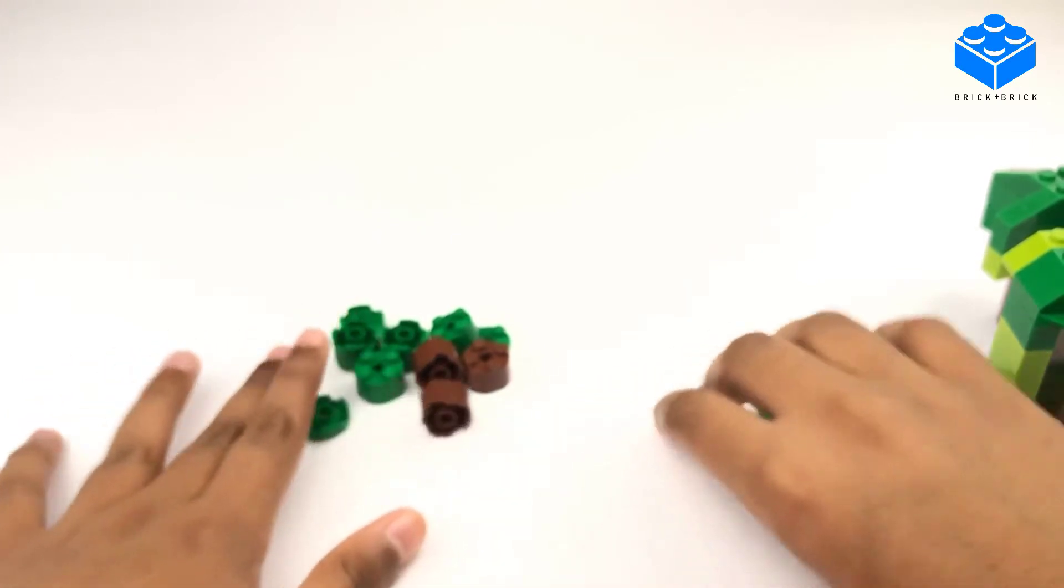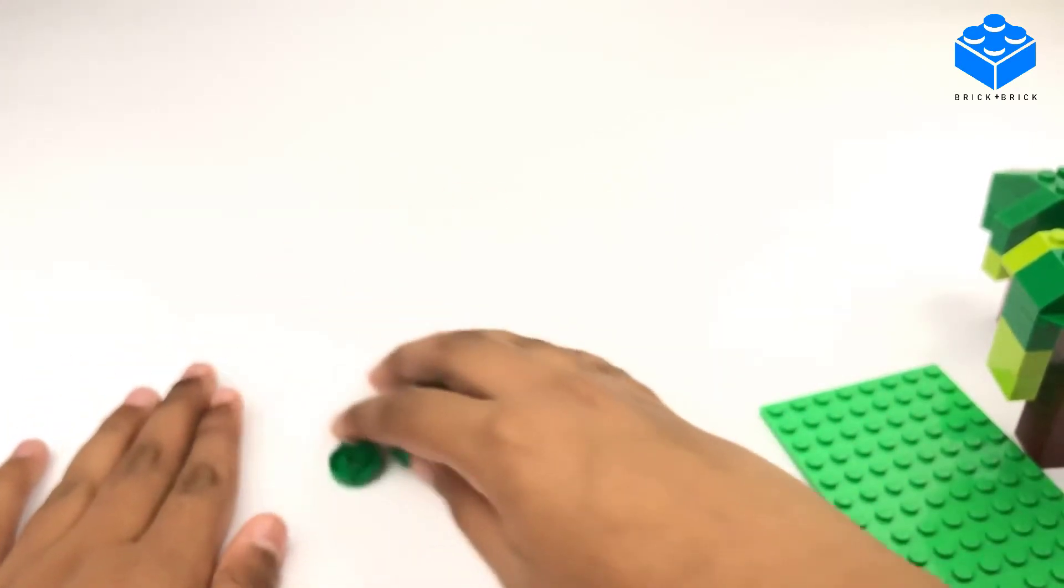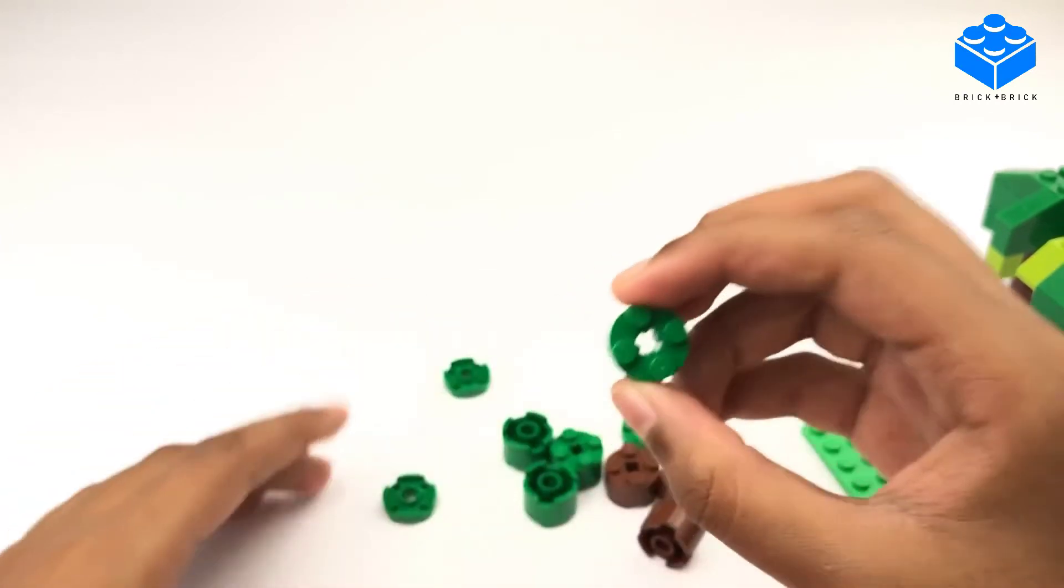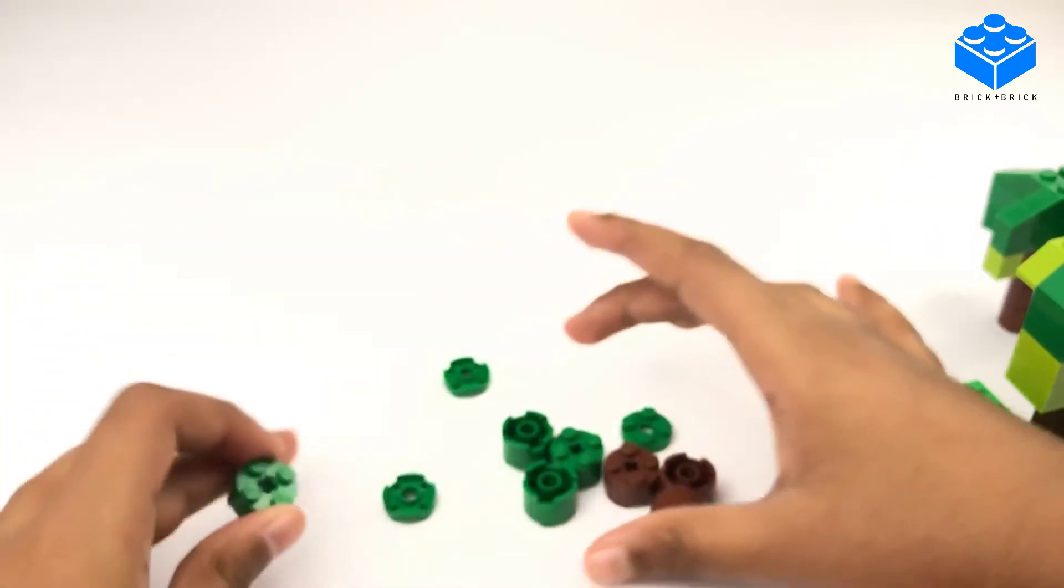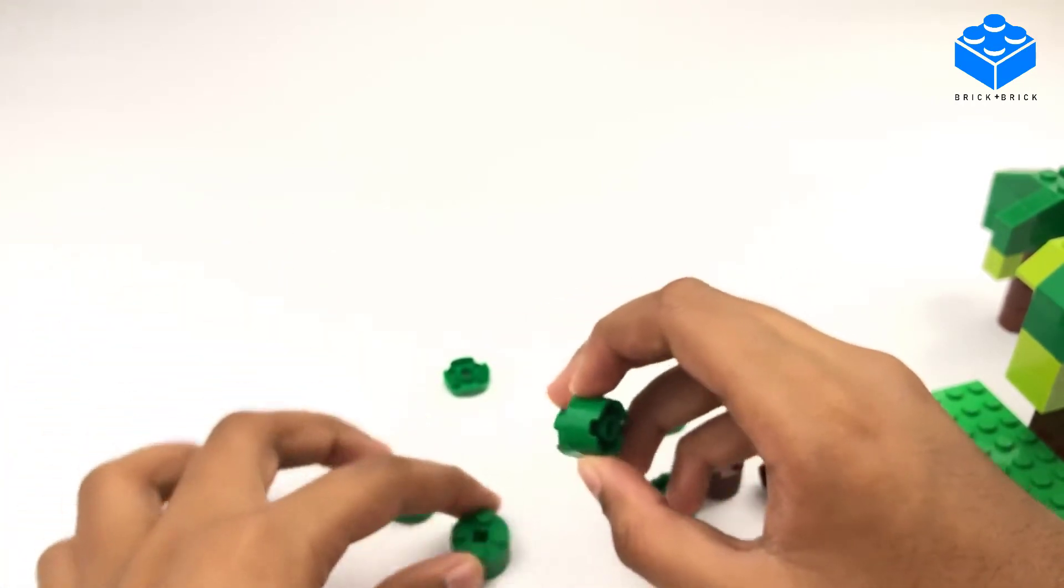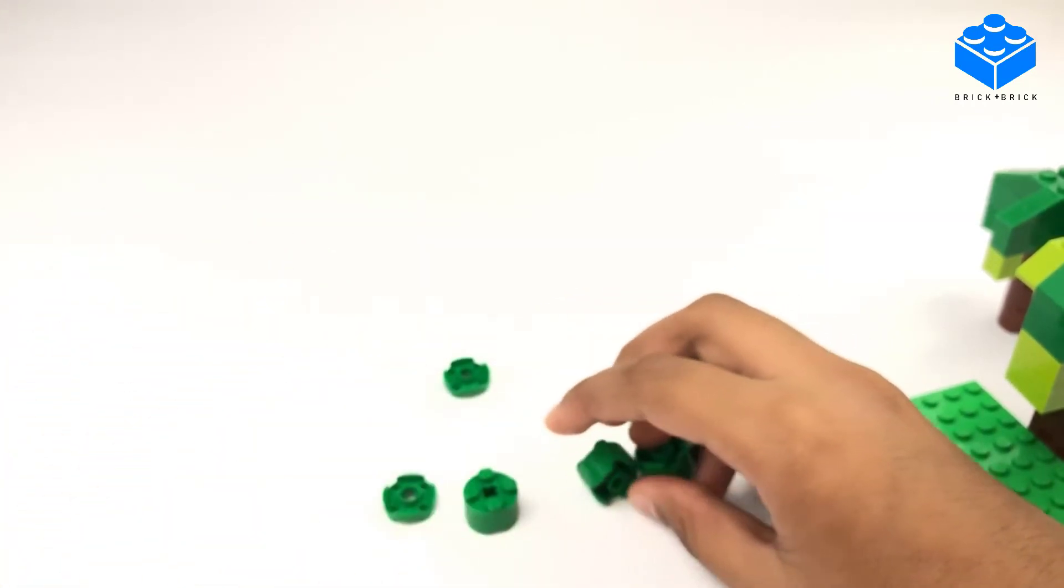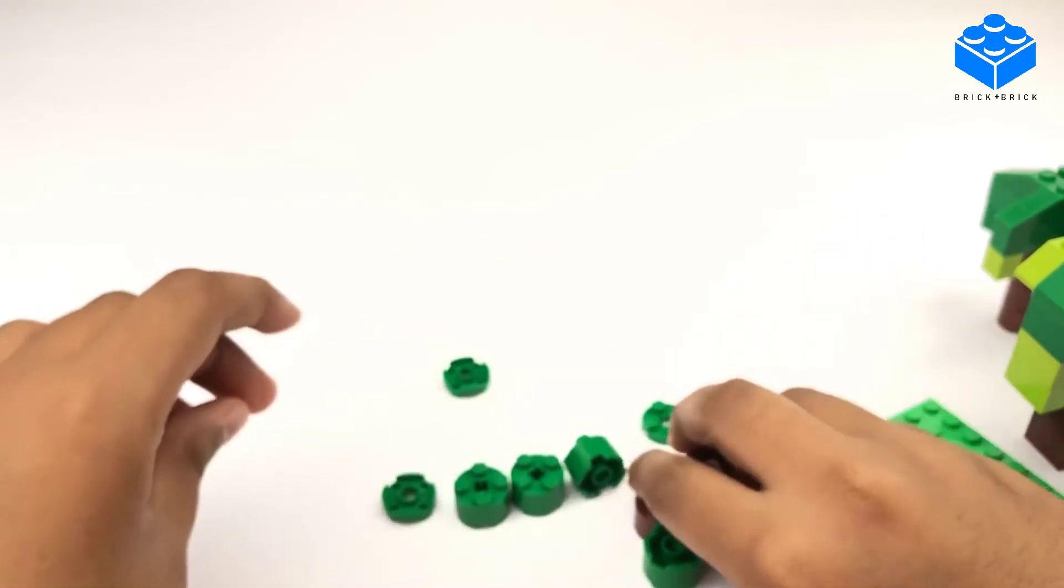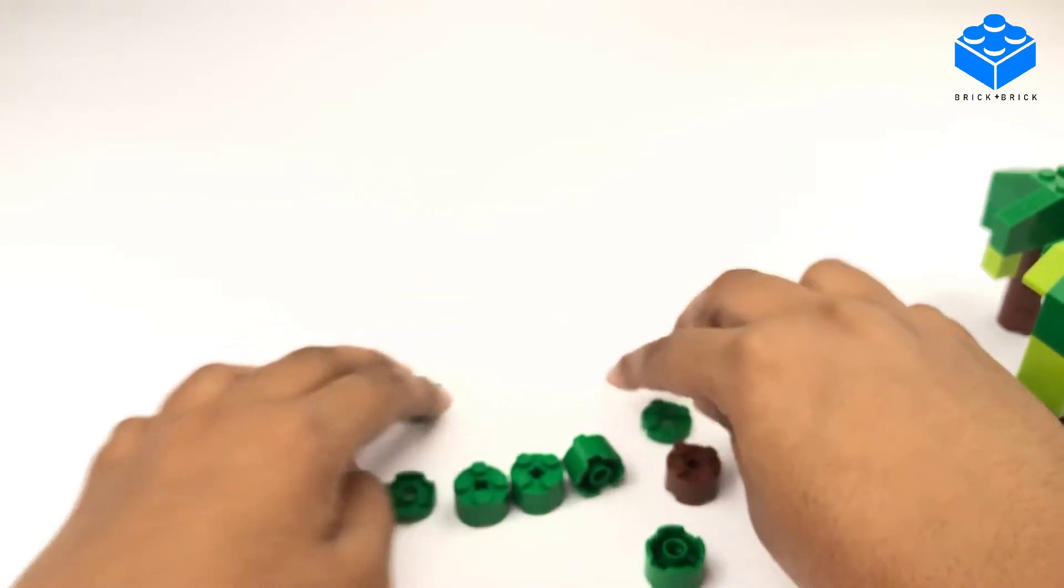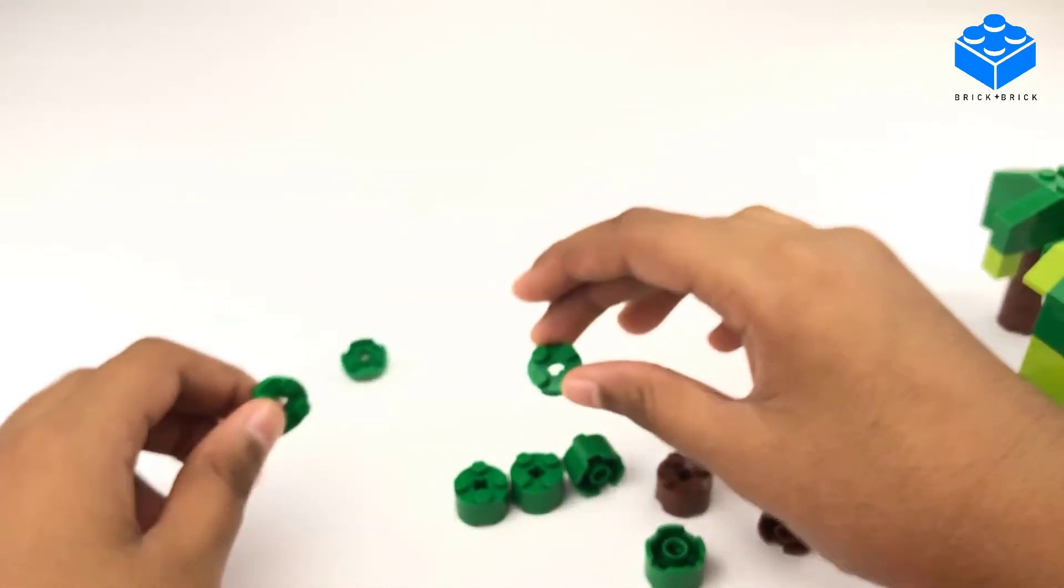So for this build you're gonna need three cylinder types from Lego. Four of these large green cylinder pieces, three brown cylinder pieces, and three flat cylinder pieces.